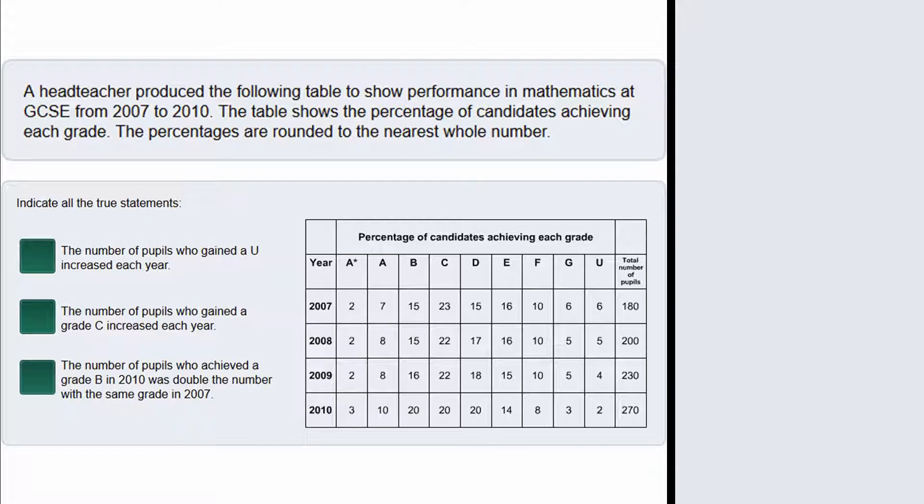Let's have a look at the first statement. This claims that the number of pupils who gained a U-grade increased each year. We need to look at this column here as this represents the U-grade. Now be very careful. Notice how the table says percentage of candidates achieving each grade. These are not numbers so we cannot simply just read to see whether this number gets higher or not.